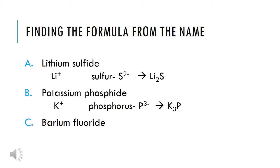Try C: barium fluoride. Barium is in group 2A and will form a 2+ cation. Fluoride — the root element is fluorine, and fluorine is in group 7A. It only needs one more valence electron to have a complete outer shell, so it will form a 1- anion. Together, we have barium with a 2+ and fluorine with a -1. For every one barium, we need two fluorides. So together it's BaF2.